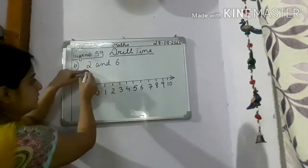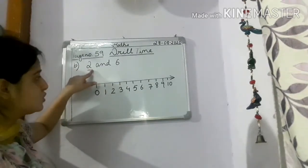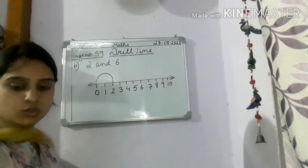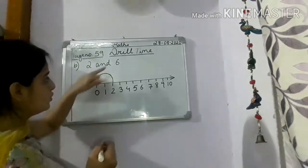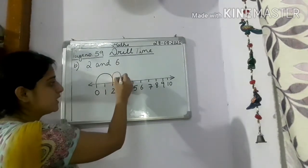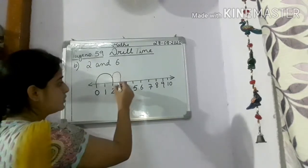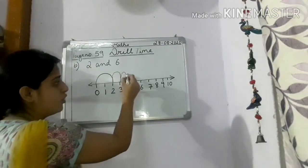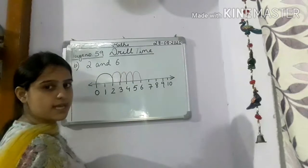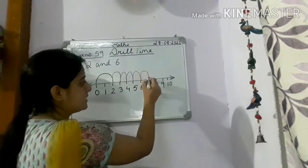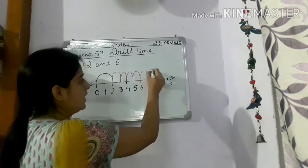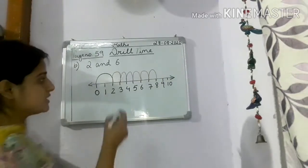So, it is already from where we have to start jumping children? From 2. So we will move first 0 to 2. Now we will start jumping from 2. How many steps children? 6 steps. So let's count from 2. 2 to 3 is 1 step. Then 3 to 4 is 2nd step, 4 to 5 is 3rd step, 5 to 6 is 4th step, then 6 to 7 is your 5th step, and from 7 to 8 is your 6th step.